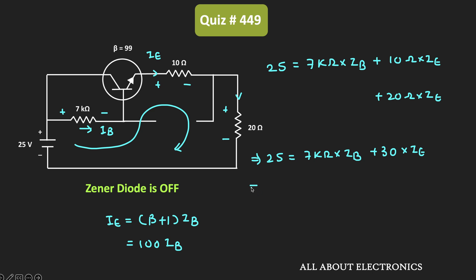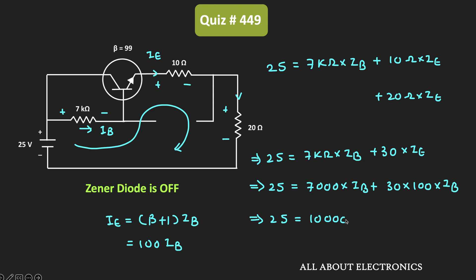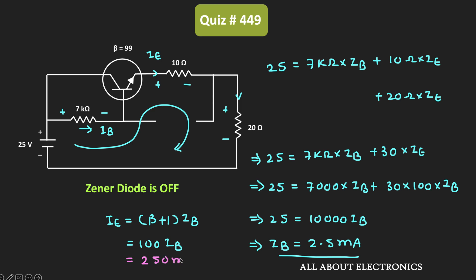Simplifying: 25 = 7000 × IB + 3000 × IB = 10000 × IB. Therefore, IB = 25 / 10000 = 2.5mA. Once we know the base current, we can find the emitter current: IE = 100 × IB = 100 × 2.5mA = 250mA. Since the Zener is OFF, the current through the 20 ohm resistor equals the emitter current, which is 250mA.